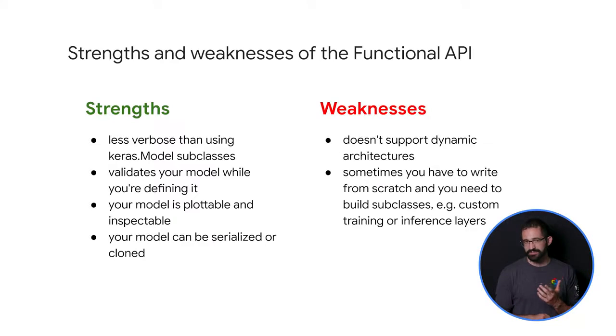Here are some weaknesses. It does not support dynamic architectures. The functional API treats models as DAGs or directed acyclic graphs of those layers. This is true for most deep learning architectures, but not all. For instance, recursive networks or tree RNNs do not follow this assumption and cannot be implemented in the functional API. Sometimes you just need to write everything from scratch. When writing advanced architectures, you may want to do things that are outside the scope of defining a DAG of layers. For instance, you may want to expose multiple custom training and inference methods to your model instance. This would require subclassing.